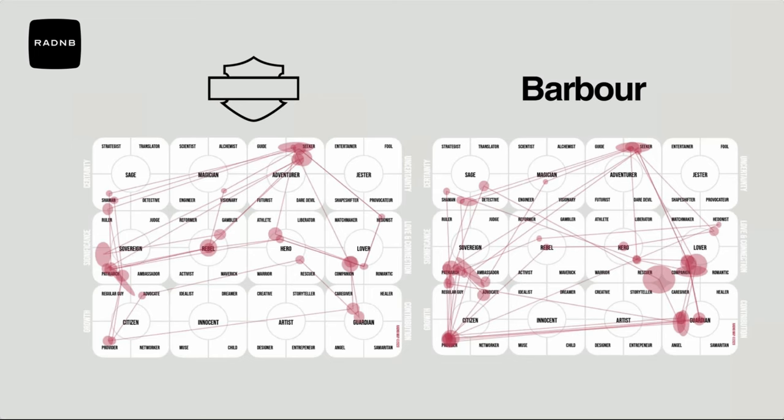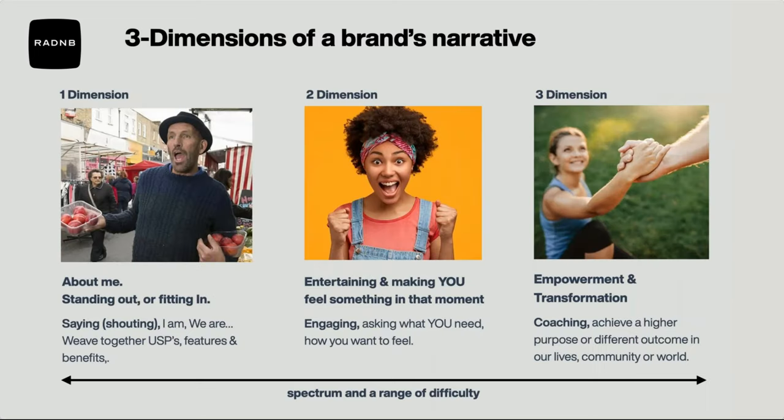We look at lots of maps and from these we've been able to see patterns — what we call the three dimensions of a narrative. The first dimension is the 'about me' story, when a brand wants to stand out or fit in by telling you what they do. The second dimension is when a brand is more focused on the customer and making them feel something in that moment. The third dimension is when a brand looks to empower you like a coach and help you grow and change your behaviors in the long term.